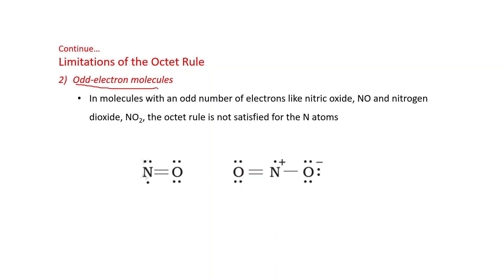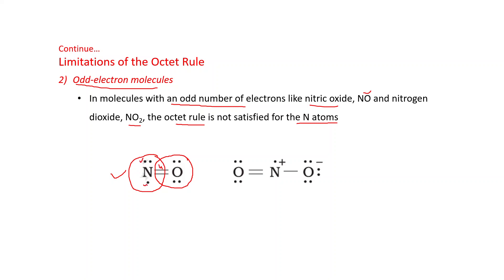Another limitation is odd-electron molecules. In molecules with an odd number of electrons, like nitric oxide NO and nitrogen dioxide NO₂, the octet rule is not satisfied for the nitrogen atoms. In the Lewis structure of NO, the octet of oxygen is completed, but the octet of nitrogen is not — with nitrogen: four electrons from the double bond, plus two, plus one lone electron equals seven electrons. Similarly in NO₂, the octet of both oxygen atoms is completed, but the octet of nitrogen is not — again seven electrons: four from the double bond, two from the single bond, and one unpaired electron. These are odd-electron molecules.